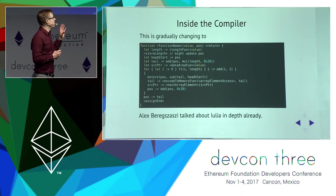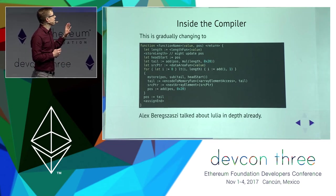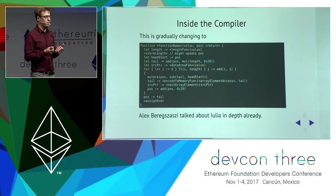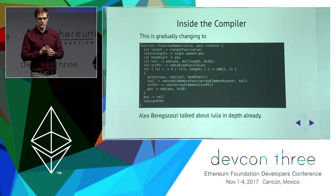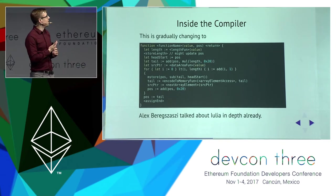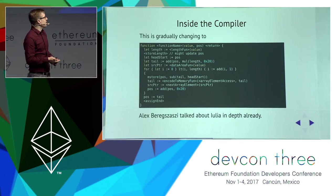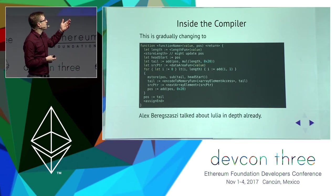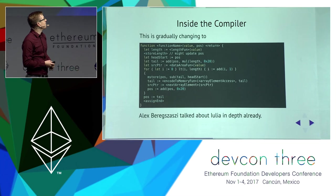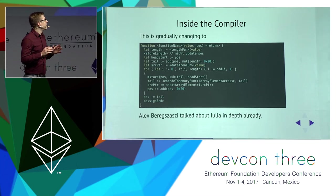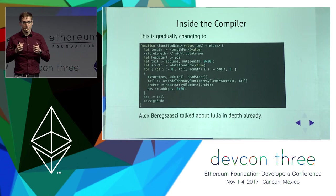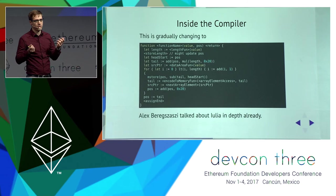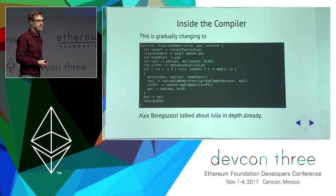What you see here is the full function to do any encoding of an array into the ABI encoding. It handles memory arrays, calldata arrays, storage arrays, arrays of arrays, arrays of constant length, arrays of dynamic length, and so on. At compilation time, template placeholders like 'length_fun' are replaced by the name of the actual function to retrieve the array length, which differs for statically sized and dynamically sized arrays.